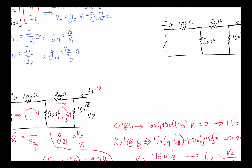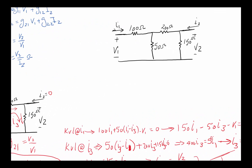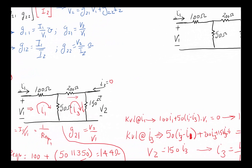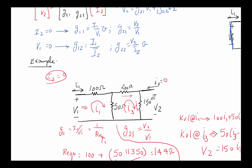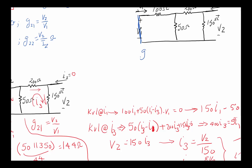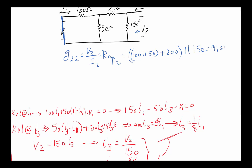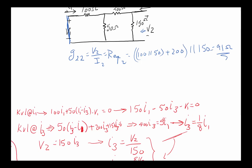Now we redo the problem with V₁ = 0 (port one shorted). First, G₂₂ = V₂/I₂, which is just the equivalent impedance looking into port two. With port one shorted, we see 100Ω in parallel with 50Ω, that whole combination in series with 200Ω, all in parallel with 150Ω. Working this out gives approximately 91Ω for G₂₂.